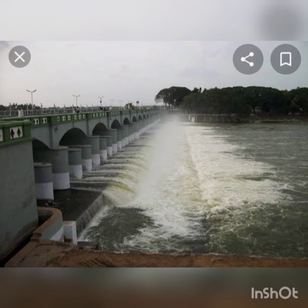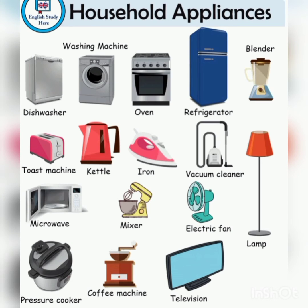The next example is electrical appliances. Electric energy is used in many electrical appliances. For example, in an electric fan, electrical energy is converted into mechanical energy. In an iron box, electrical energy is converted into heat energy. In a bulb or tube light, electrical energy is converted into light energy.